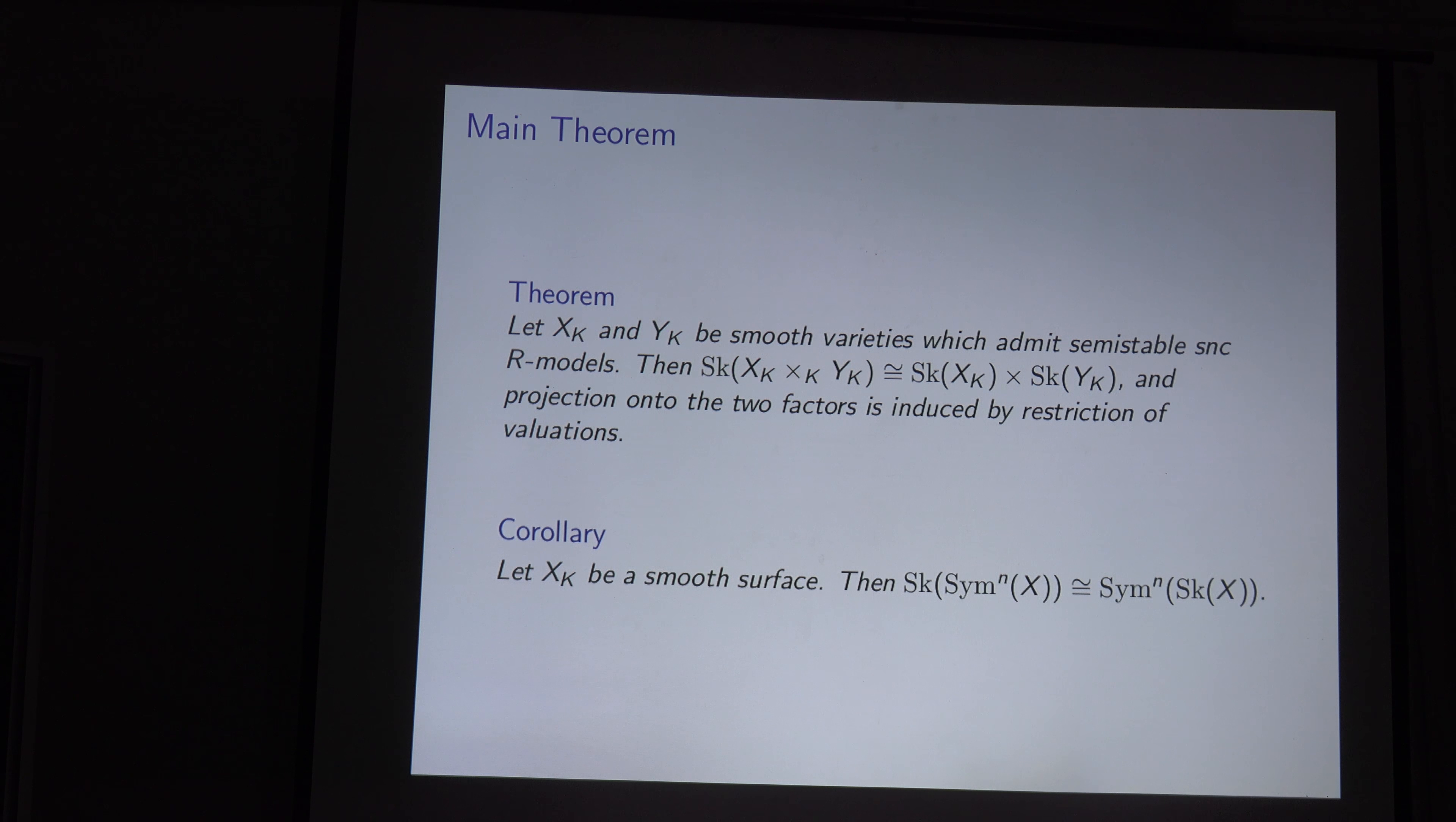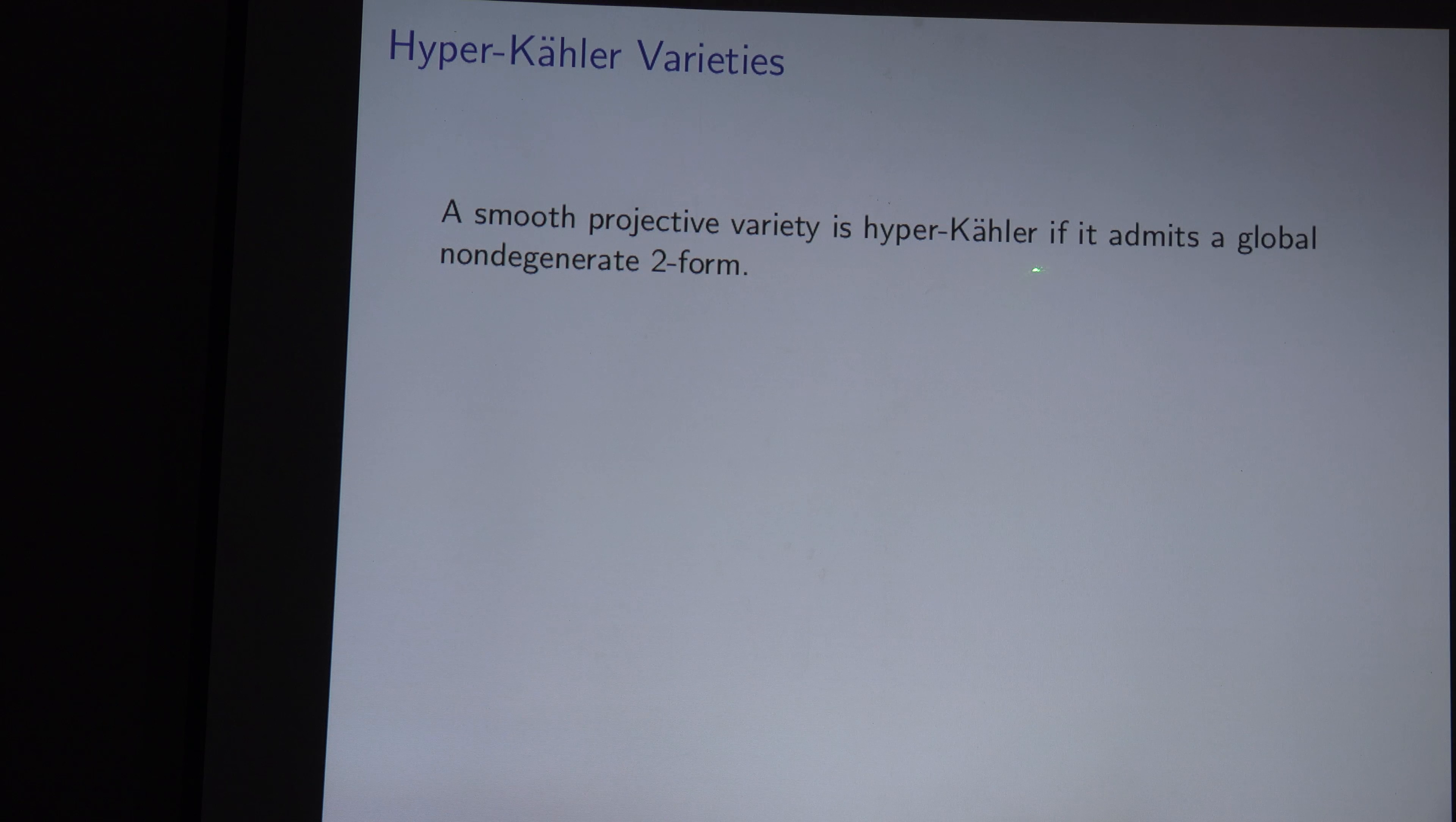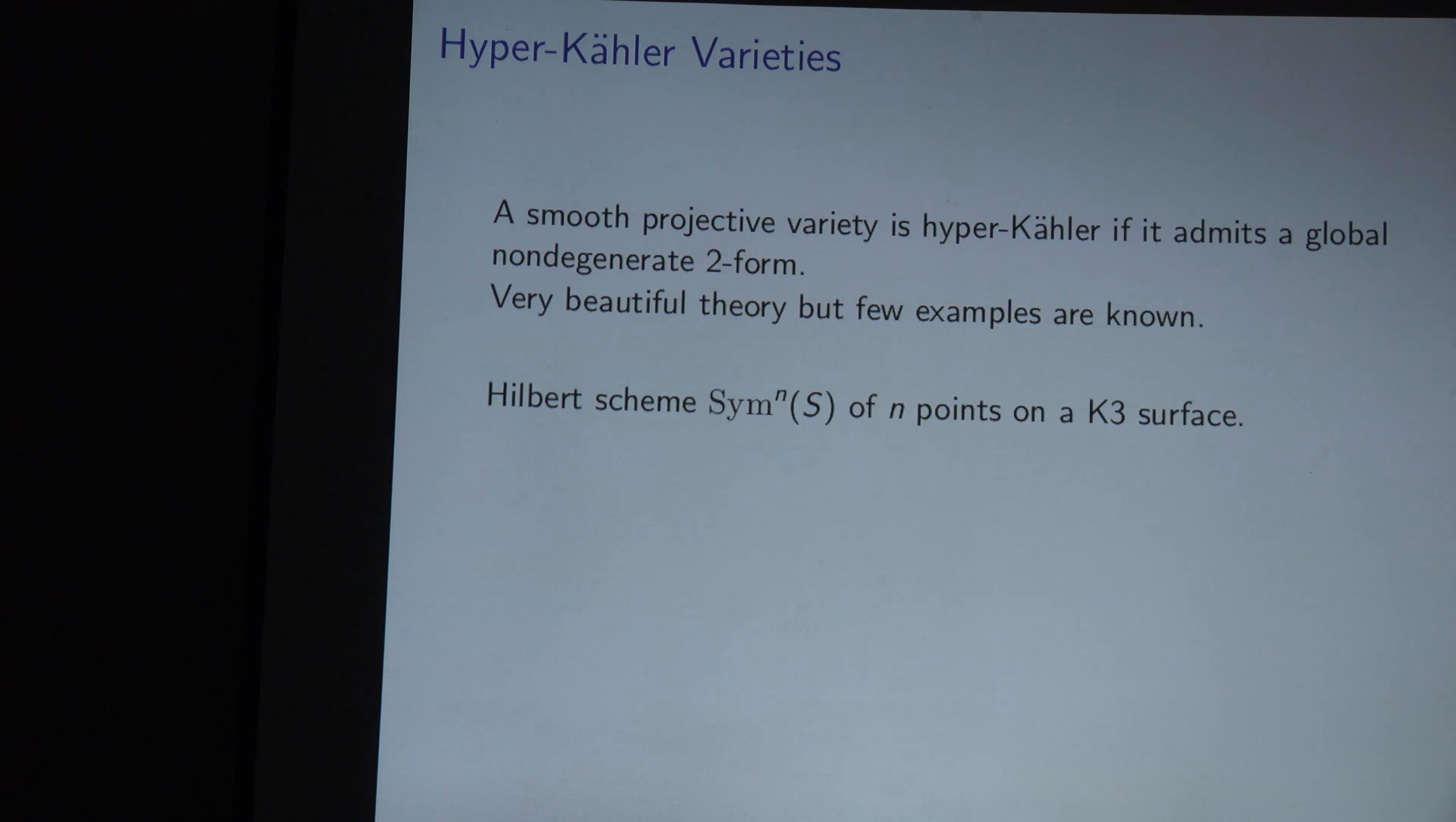Okay. So I think I have a little less than 10 minutes left, and that's enough time to do the fun part, which is the application to degenerations of hyperkähler varieties. Okay. So hyperkähler variety is a kind of, one way to give a higher dimensional generalization of K3 surface. It's a smooth projective variety that has a global nondegenerate 2-form. It should also say simply connected, but I forgot to put it down, but it's simply connected. So, you know, it's a very beautiful theory. I mean, in particular, there is the Beauville-Bogomolov decomposition theorem, which says that these are one of the fundamental building blocks of K-trivial varieties.